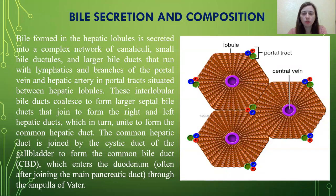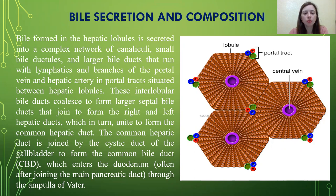Some information about bile secretion and composition. Bile formed in the hepatic lobule is secreted into a complex network of canaliculi, small bile ductules, and larger bile ducts that run with lymphatics and branches of the portal vein and hepatic artery in portal tracts situated between hepatic lobules. These intralobar bile ducts coalesce to form large septal bile ducts, which join to form the right and left hepatic ducts. The hepatic duct is joined by the cystic duct of the gallbladder to form the common bile duct, which enters the duodenum through the ampulla of Vater.